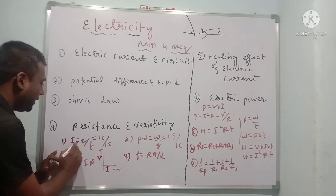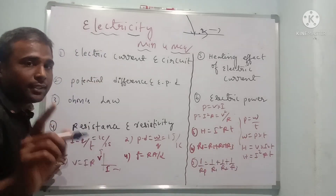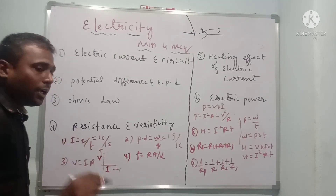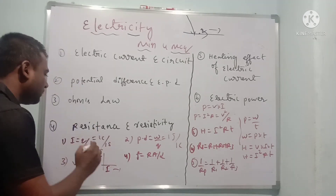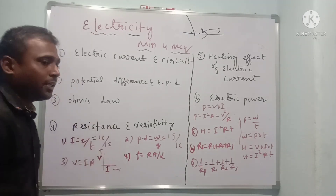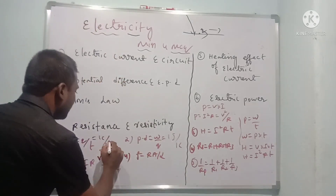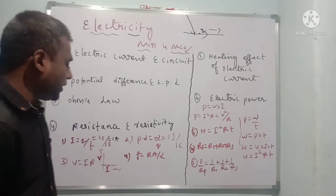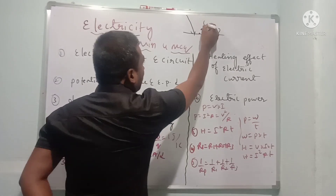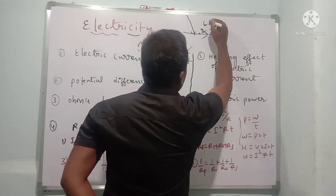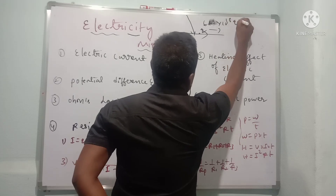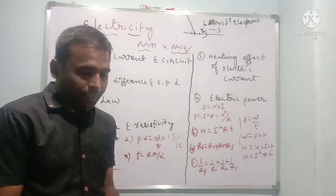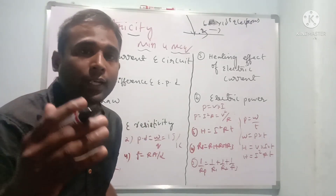Electric current is given by the formula I = Q/T. Q means charge. When one coulomb of charge is moved in one second, that is called one ampere. In one coulomb of charge, we can find that 6.25 × 10^18 electrons are present, so in one second that many electrons are moving.